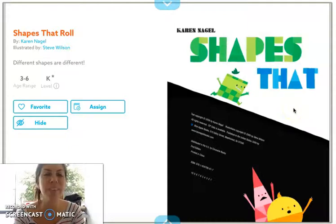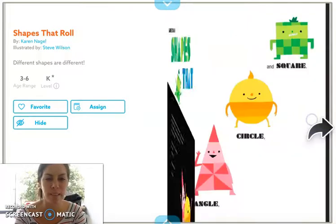Hello everyone! Today we're going to read this book Shapes That Roll by Karen Nagel. Let's see.